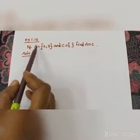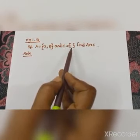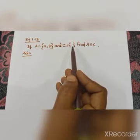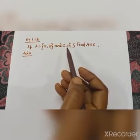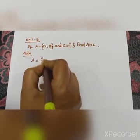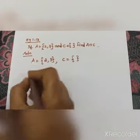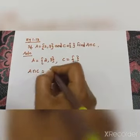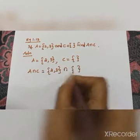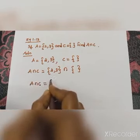Next, example 1.13. If A = {2, 3} and C = null set (empty set), find A intersection C. A intersection with null set gives null set only — there is no common element. So A intersection C is equal to null set.